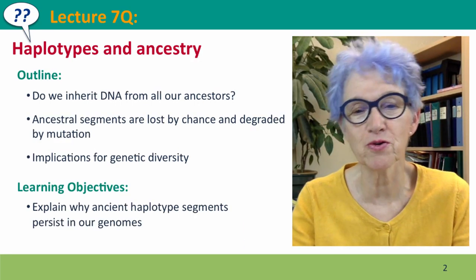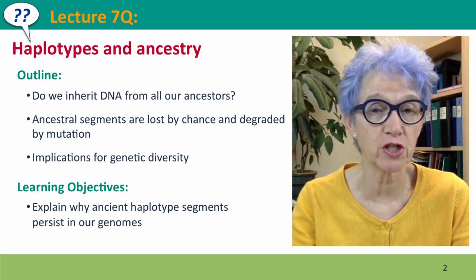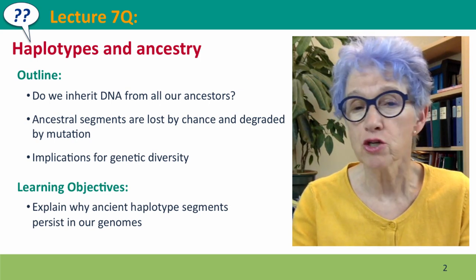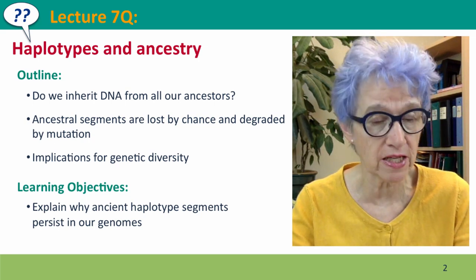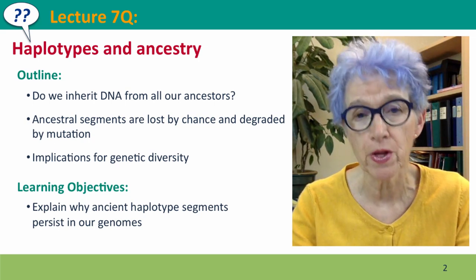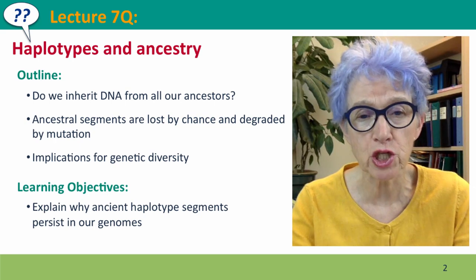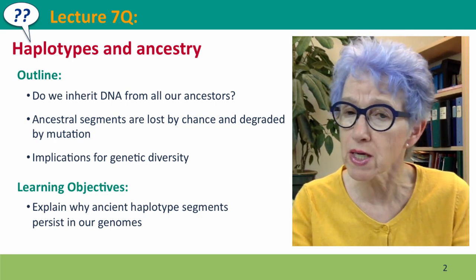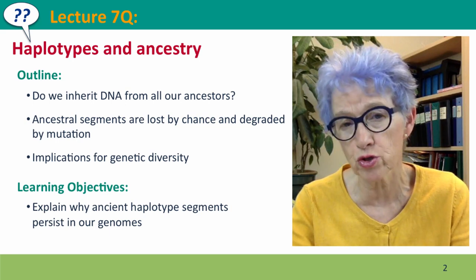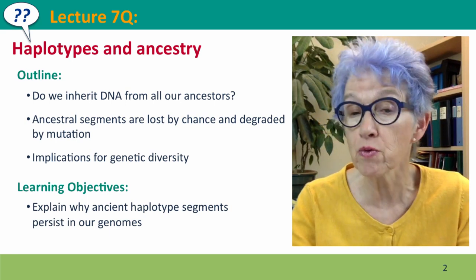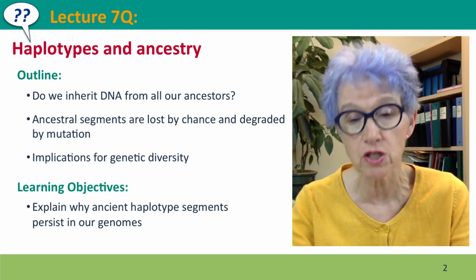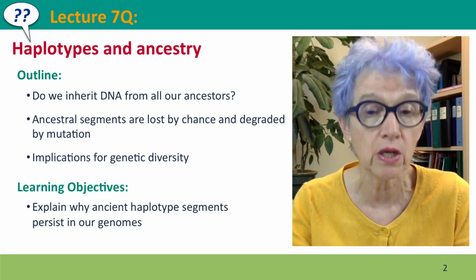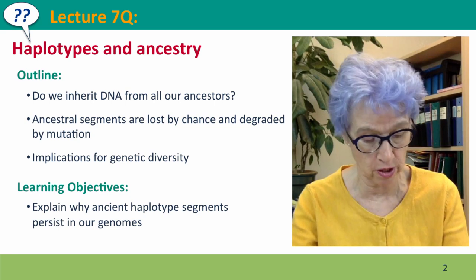Hi, everyone. Welcome back to Useful Genetics. This is Lecture 7Q, where we're going to extend our discussion of relatedness to a deeper consideration of ancestry farther back in time. We'll think about what happens to the segments of DNA that we inherit from our ancestors — to what extent they are lost by chance or degraded by mutation — and the implications of this for genetic diversity, the fundamental raw material needed by natural selection.